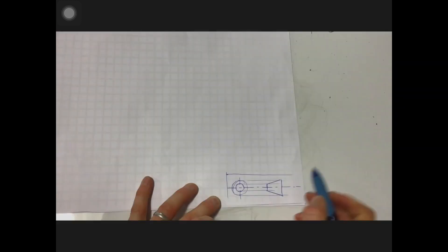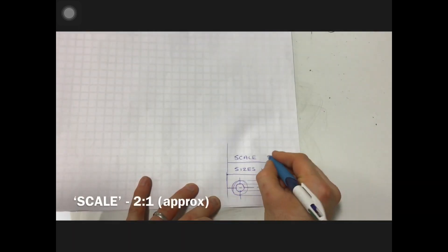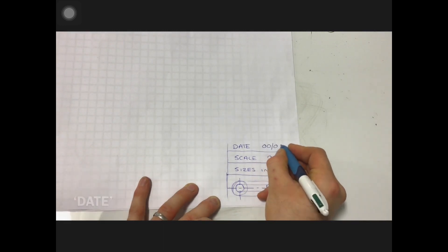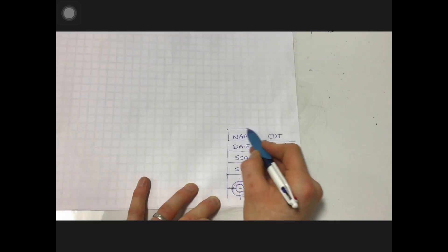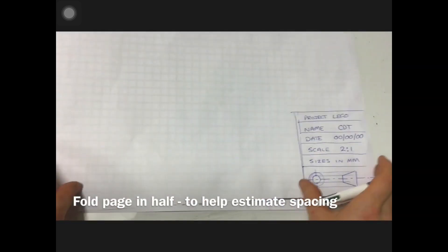I'd have to put in the sizes, scale - it's going to be two to one - the date, the name of the drawer. This is just CDT, what is being drawn, and this is just LEGO. That's needed for that.